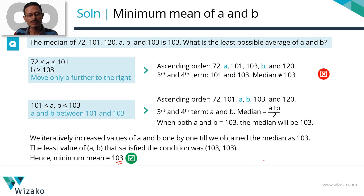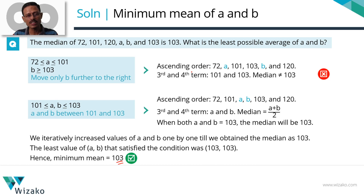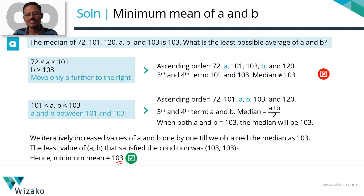This question can only be solved using the iterative process. You could cut down a few steps if you quickly realize that both a and b cannot be less than 72, reducing the iterations to perhaps four or five steps. But iteration is the only valid approach for these questions — it's actually a beautiful way to understand how numbers work.